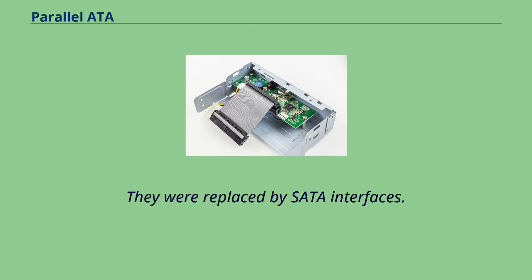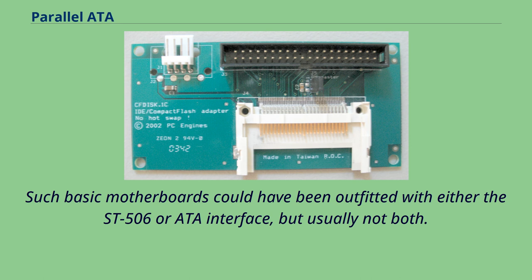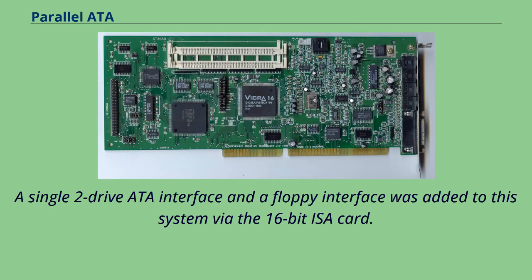They were replaced by SATA interfaces. An example is a 1992 80386 PC motherboard with nothing built in other than memory, keyboard, processor, cache, real-time clock, and slots. Such basic motherboards could have been outfitted with either the ST-506 or ATA interface, but usually not both. A single two-drive ATA interface and a floppy interface was added to this system via a 16-bit ISA card.